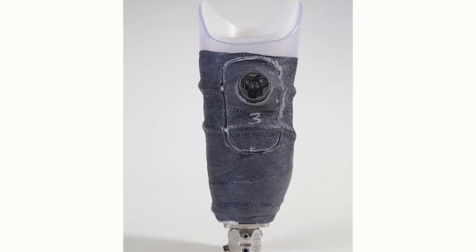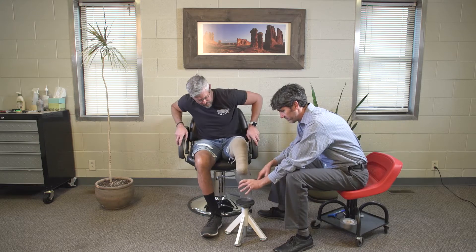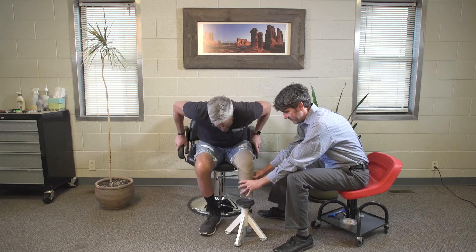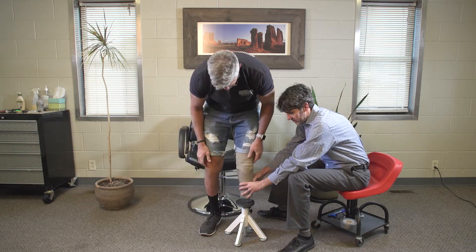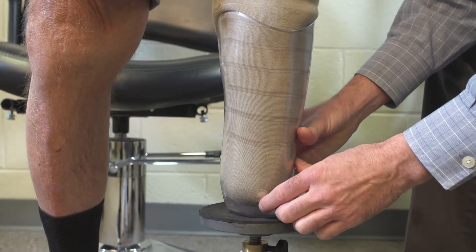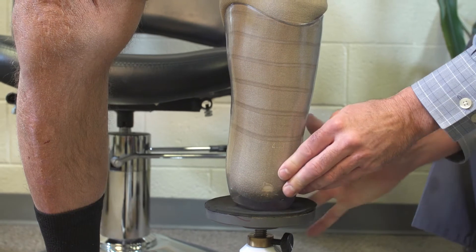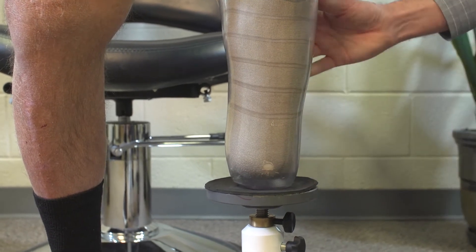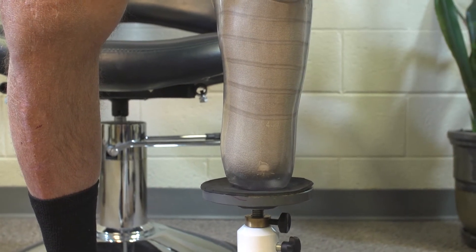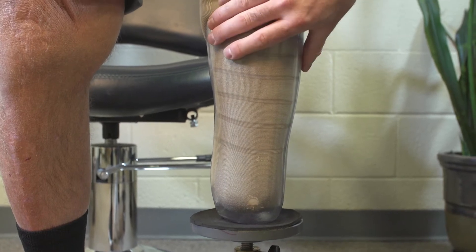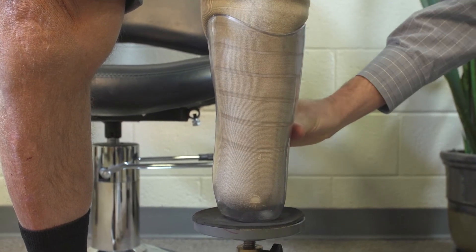Making a RevoFit check socket is simple. Make your first check socket verifying fit and volume as always. If you nailed the fit on the first check socket, simply add RevoFit adjustability to it. If, however, changes are needed, fabricate a second check socket, and then integrate RevoFit to this one.